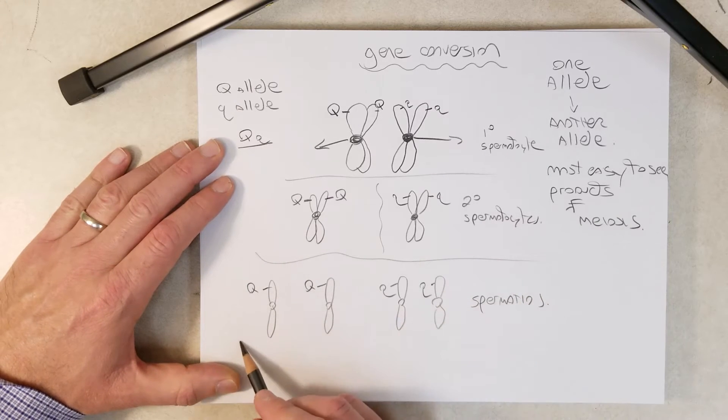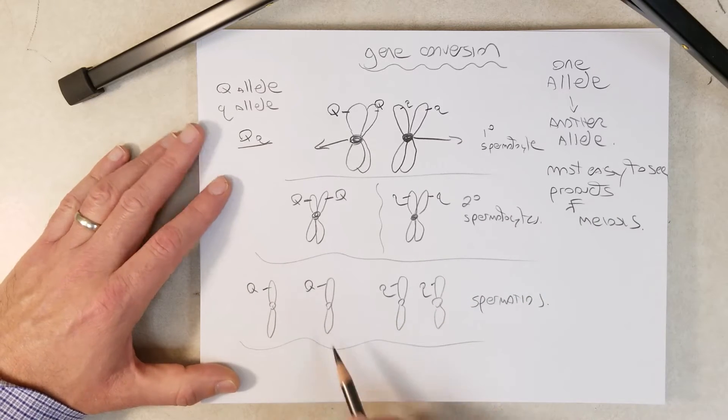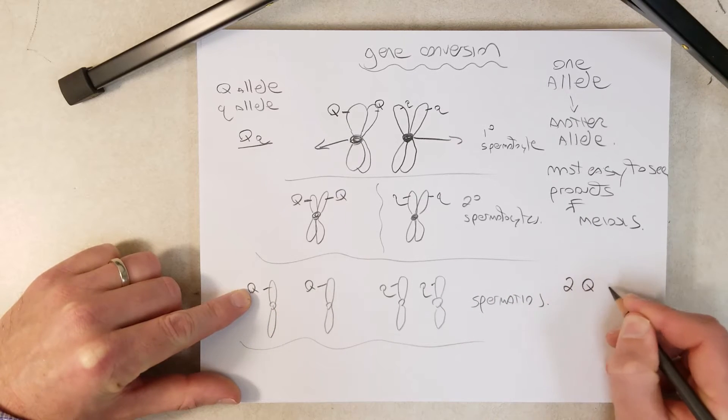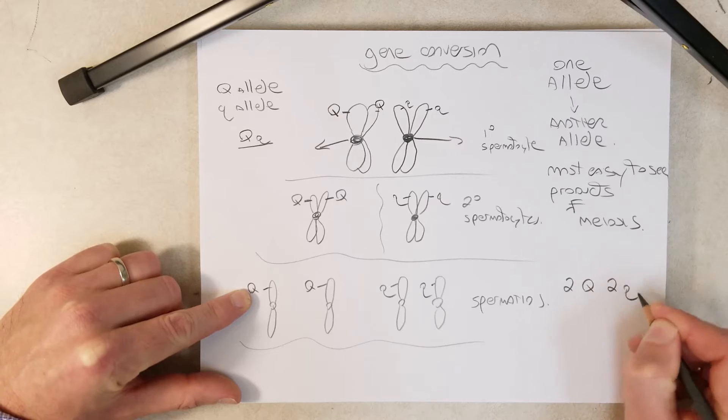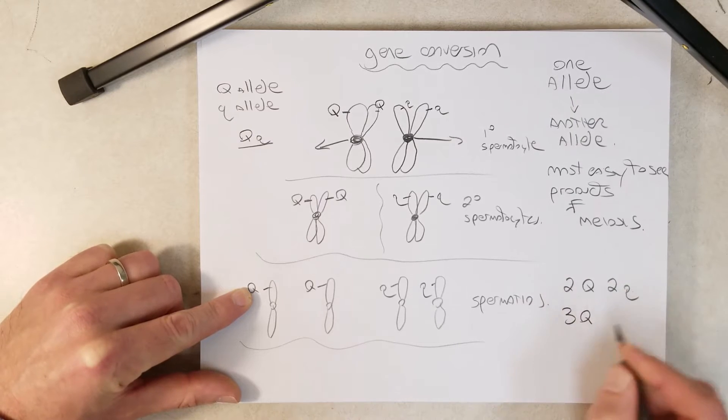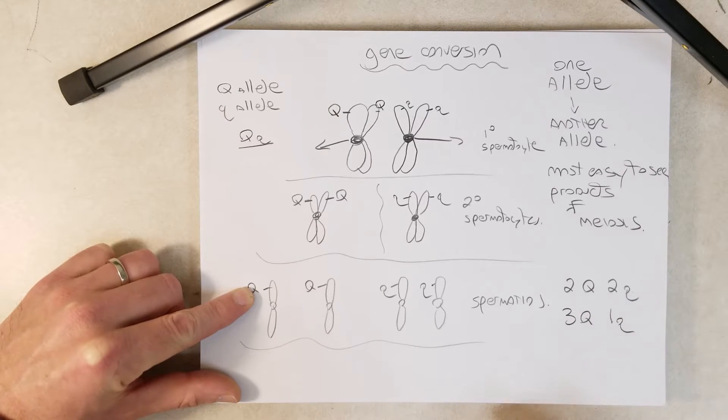So two of the spermatids have the big Q allele, and two have the small Q allele. And that's what we would expect from an individual that is heterozygous. Now sometimes, if gene conversion occurs, two big Q and two little Q are expected.